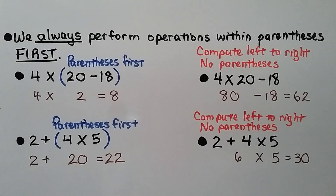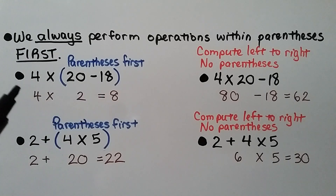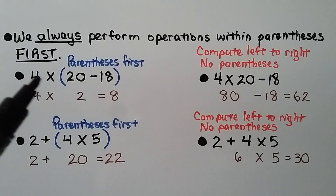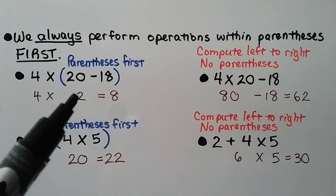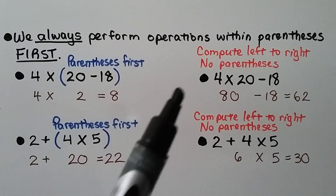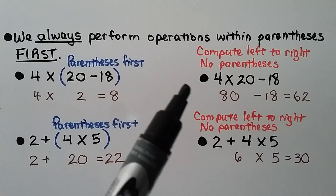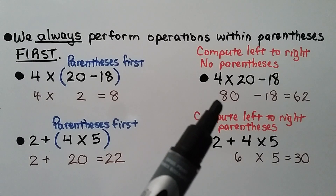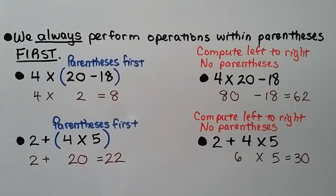We always perform operations within parentheses first. For the expression 4 times (20 minus 18): doing the parentheses first, 20 minus 18 equals 2, then 4 times 2 equals 8. If we compute left to right with no parentheses, we would have 4 times 20, which is 80, then subtract 18, giving 62 — a very different answer.